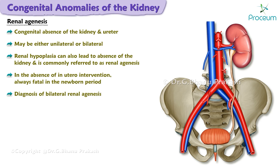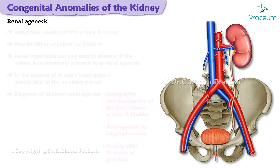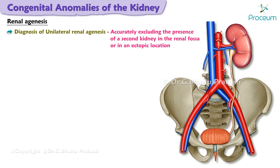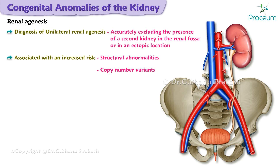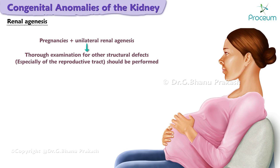The diagnosis of bilateral renal agenesis is based upon sonographic non-visualization of the fetal kidneys, ureters, and bladder, accompanied by oligohydramnios, usually after 16 weeks of gestation. Unilateral renal agenesis is more difficult to diagnose and depends upon accurately excluding the presence of a second kidney in the renal fossa or in an ectopic location. Renal agenesis is associated with an increased risk of other structural abnormalities, copy number variants, single gene disorders, and chromosomal abnormalities.